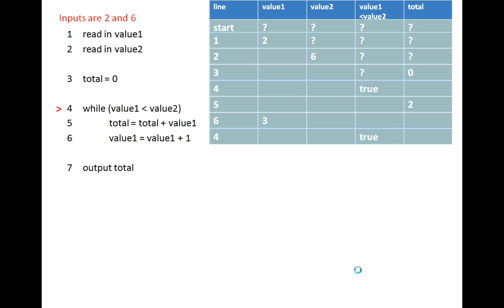Because this is a loop, it comes back up to line four. Note in the trace table that the line number is four, not seven, even though it is the seventh thing executing — it's the number in the code. Value one is now three; looking up the trace table for the last set value we know value two is six, unchanged throughout. Three is less than six so value one less than value two is true. The loop steps in so line five executes: total equals previous total of two plus value one of three, giving a new total of five.